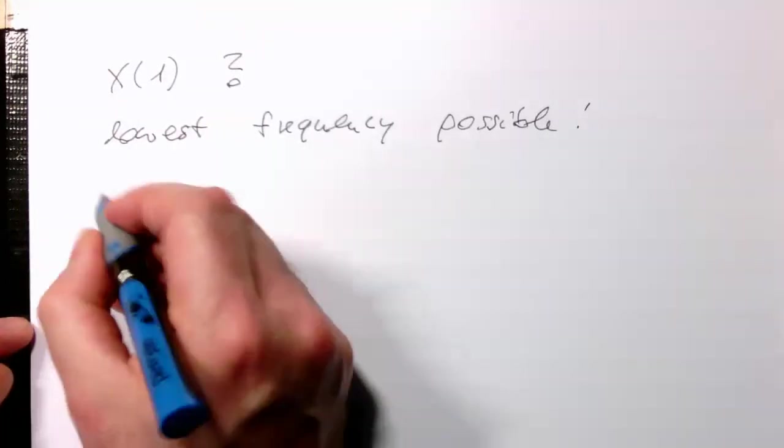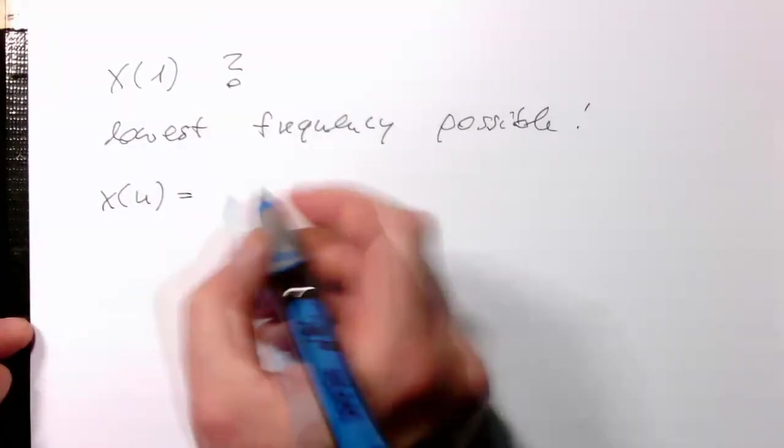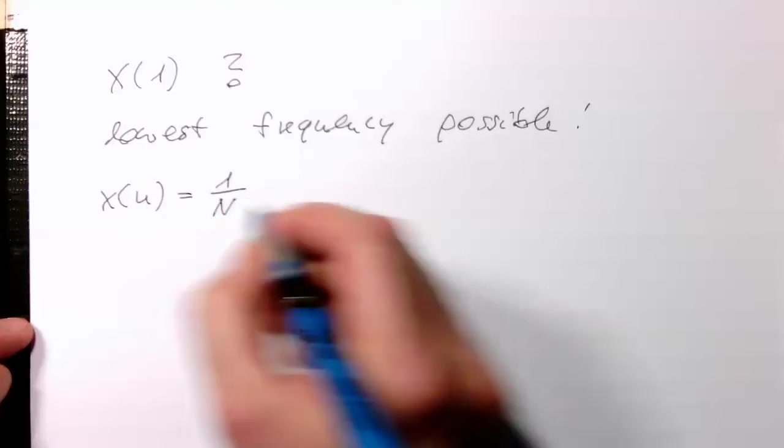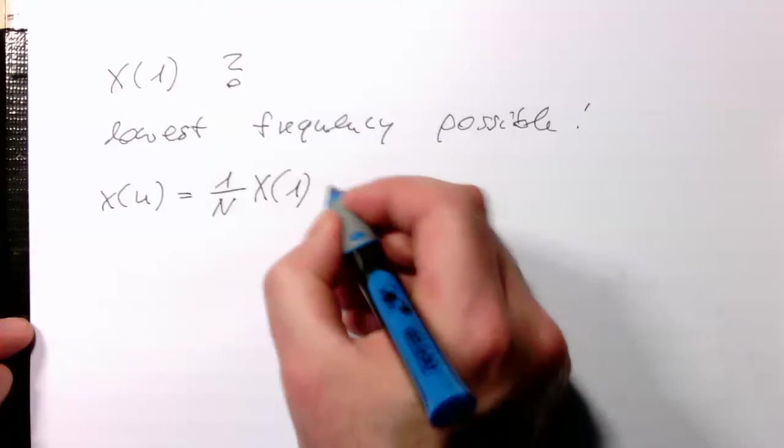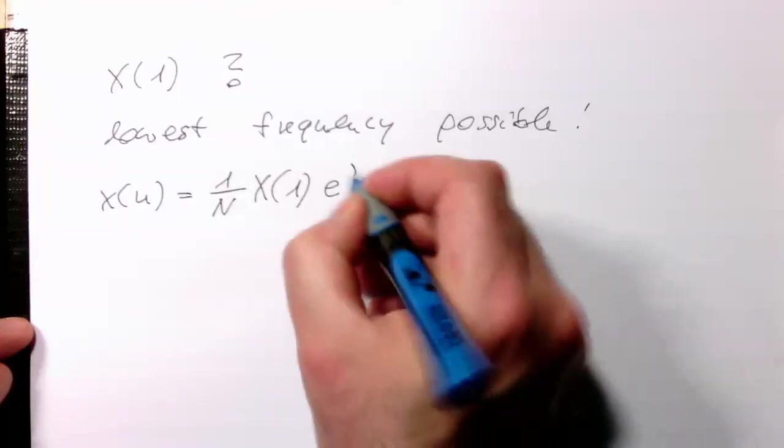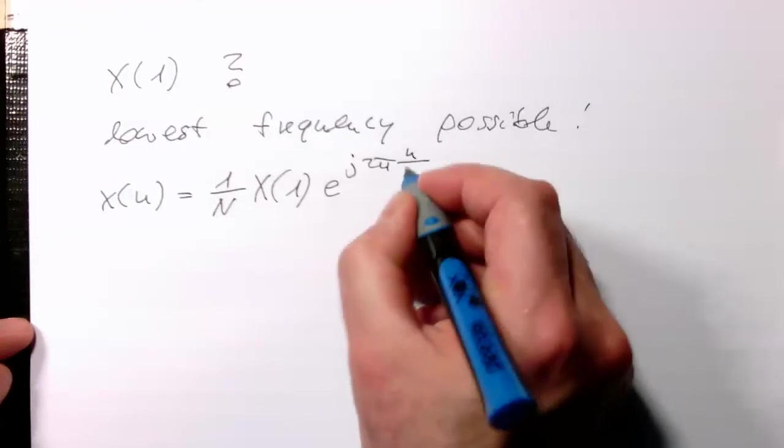If we are looking at our inverse Fourier transform here, then we are getting a term out there, which is e^(j2π n) divided by N.